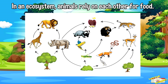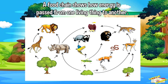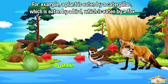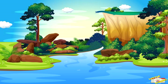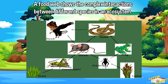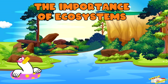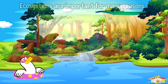A food chain shows how energy is passed from one living thing to another. For example, a plant is eaten by a caterpillar, which is eaten by a bird, which is then eaten by a fox. A food web shows the complex interactions between different species in an ecosystem.